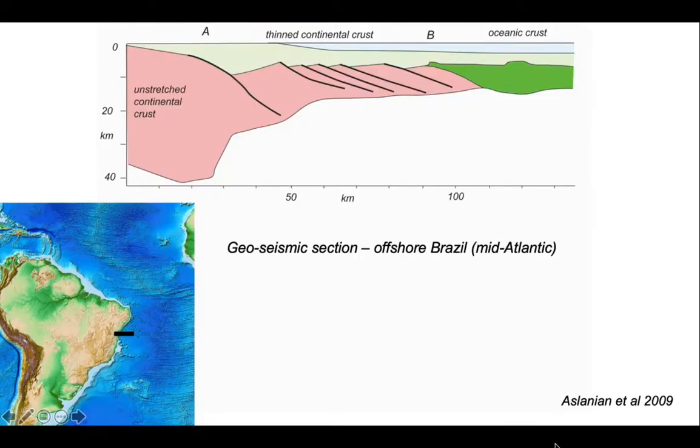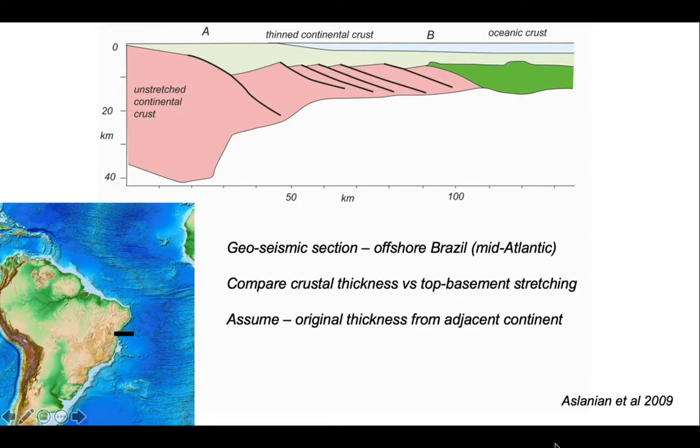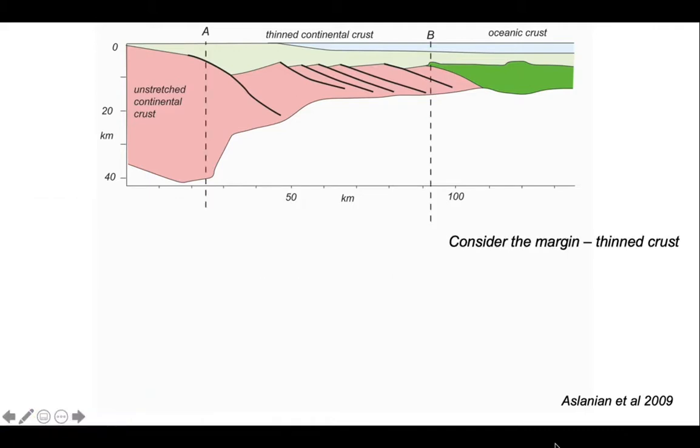Here's the results of a seismic refraction profile which can get Moho depth pretty accurately as we go from the continents on the left out to the ocean on the right. We can also image the base of the sedimentary cover. What we'll do now is compare the crustal thickness versus the stretching betrayed by the top of the basement. We can assume that the original continental thickness was that at the left-hand side when you get onto onshore Brazil, and we're going to do this by comparing between points A and B across the margin.